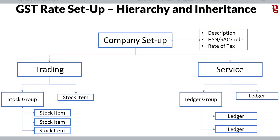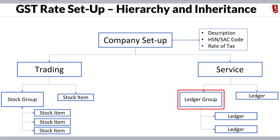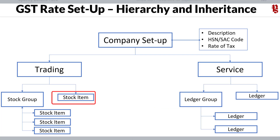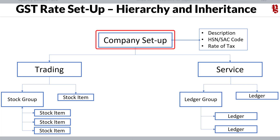You can see the diagram on the screen. Once a GST rate is set up at the company level, it will automatically inherit to the lower levels of other inventory and accounting masters. This was the design in the earlier GST module prior to Release 3.0. While calculating GST in the voucher, Tally will walk backwards from the bottom of the hierarchy. Tally looks for any rate specified in the accounting ledger first. If found, it applies that rate. If not, it moves to the accounting group, then the stock item, then the stock group, and finally the company.